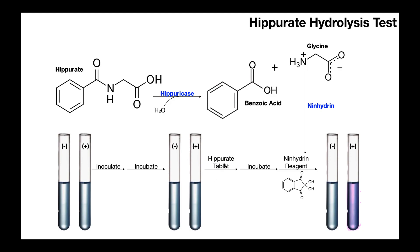Next, we introduce a Hippurate tablet — a tablet that contains a lot of Hippurate and provides a substrate that Hippuricase can act on and break down into benzoic acid and glycine. Once we put the Hippurate tablet in, we incubate and allow the bacteria to metabolize that Hippurate. After sufficient incubation time, we introduce the ninhydrin reagent. If the bacteria express Hippuricase, they'll break down the Hippurate into benzoic acid and glycine, and the ninhydrin will react with glycine to produce a bluish violet color.